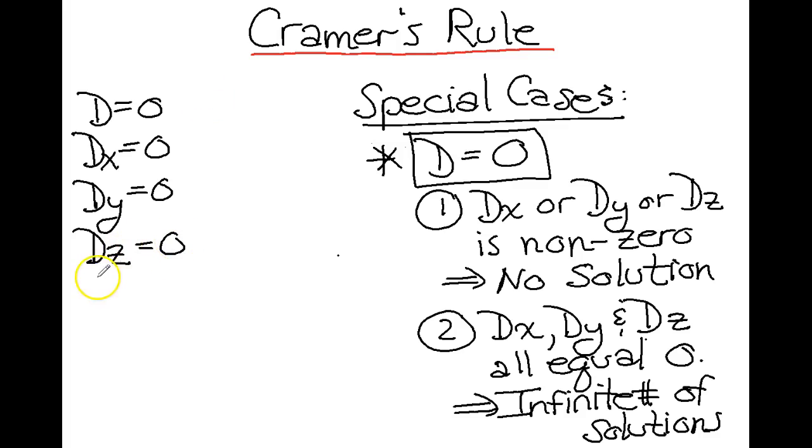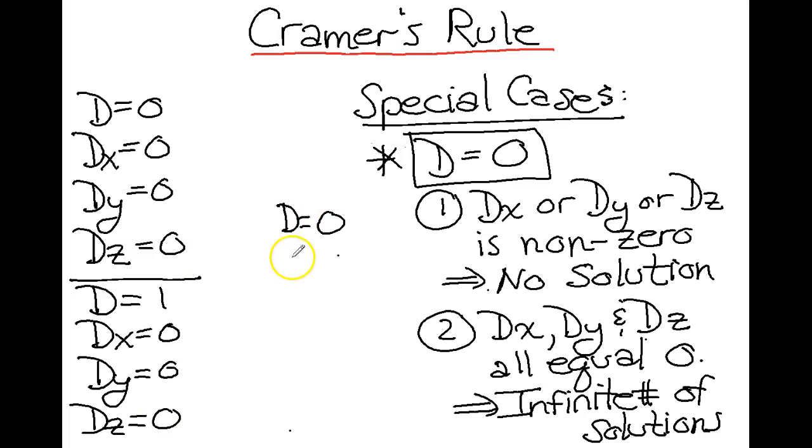And then let's do a case where d equals one, dx equals zero, dy equals zero, dz equals zero. And then we'll try another case. We'll say d equals zero, dx equals zero, dy equals zero, and dz equals negative seven.